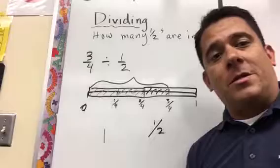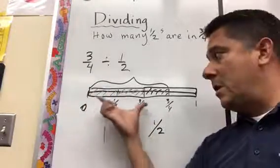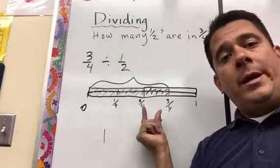Now the answer to the question of how many halves are in 3 fourths, the answer is there's one and a half.